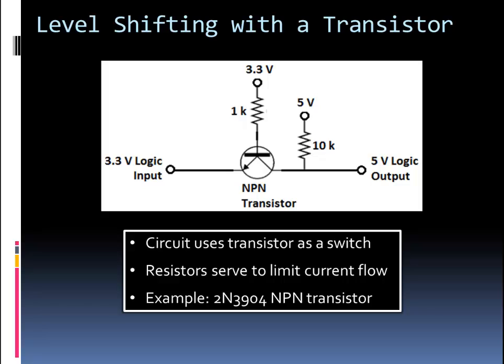Our third level shifting method is to use an NPN transistor. Here we're going to use the transistor as a switch, not as an amplifying device. We're just either going to turn it on or off. I have 3.3V, a constant 3.3V tied to the base, and then I have 5V tied to the collector but with a 10 kilo ohm resistor in series.